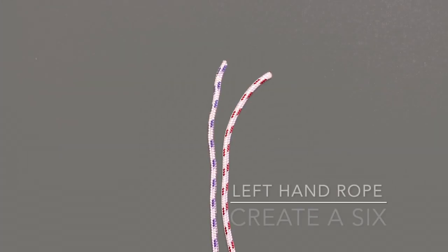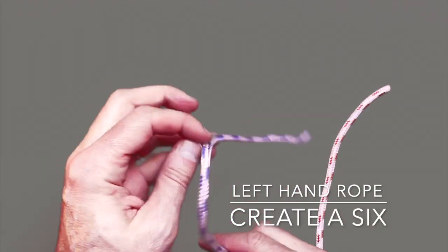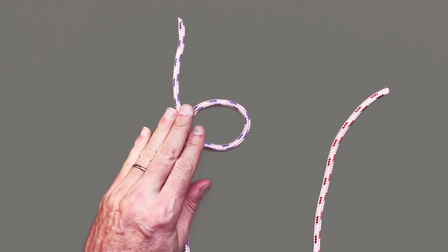Step one of the zeppelin knot is to create a six with the left hand piece of rope by looping the working end over the top of the standing end.